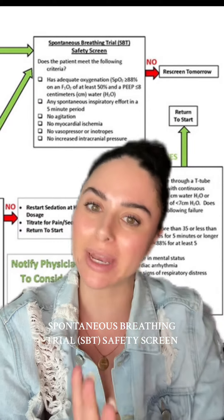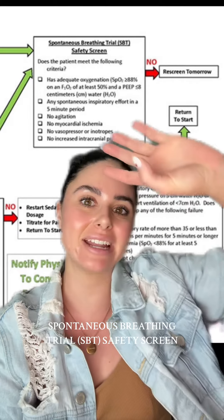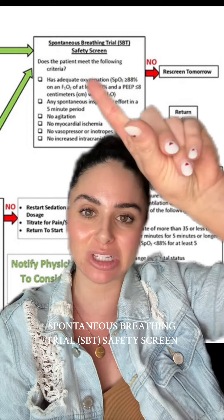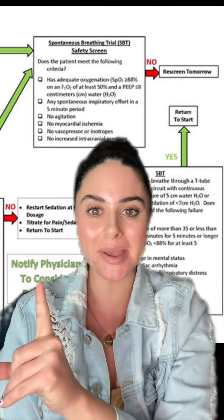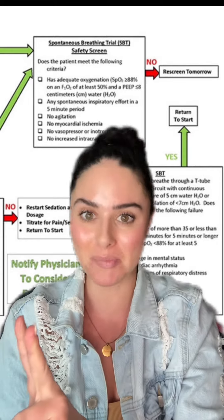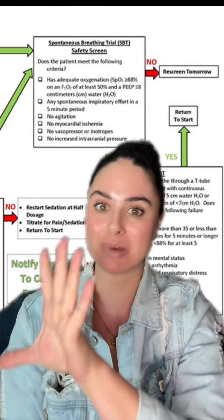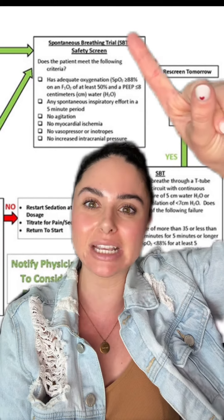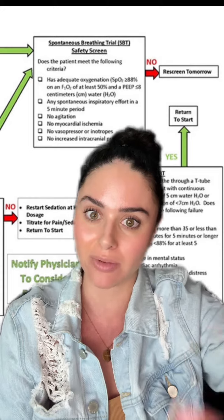This is part three in my weaning and extubating patient series, and I'm going to be talking about the spontaneous breathing trial safety screen in this video. At this point we have screened our patient to see if we can wake them up, we have woken our patients up and they have been able to safely be awake, and now we are going to screen them to see if we can safely put them on a spontaneous breathing trial.